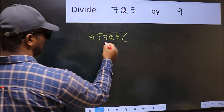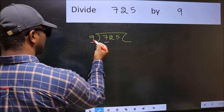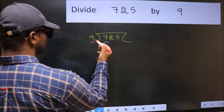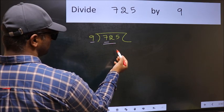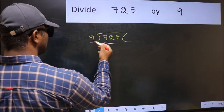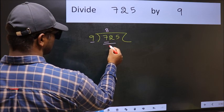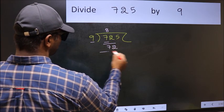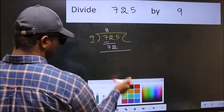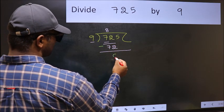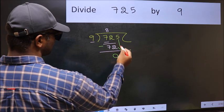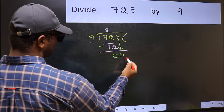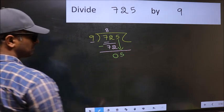Here we have 7 and here 9. 7 is smaller than 9, so take 2 numbers: 72. When do we get 72 in 9 table? 9 times 8 is 72. Now we should subtract. 72 minus 72 is 0. After this, bring down the beside number, so 5 down.